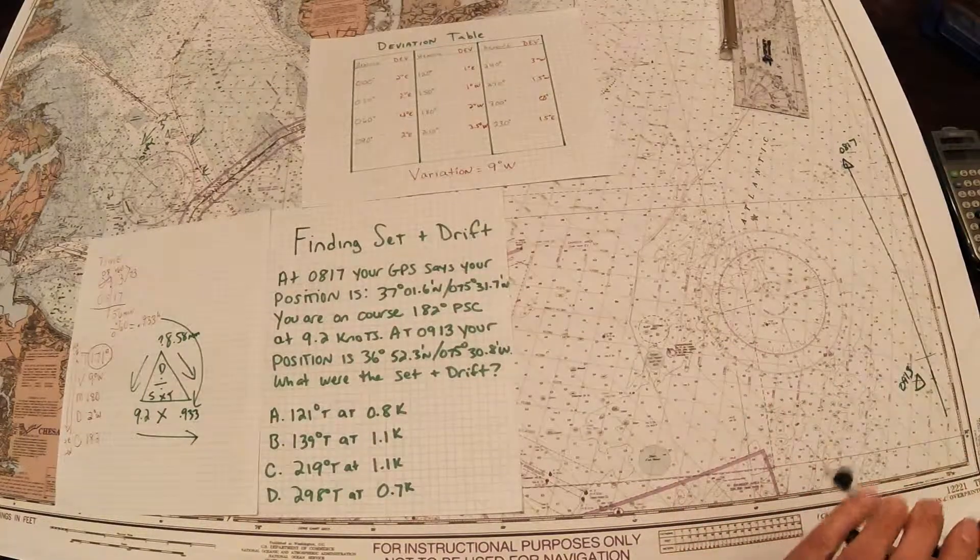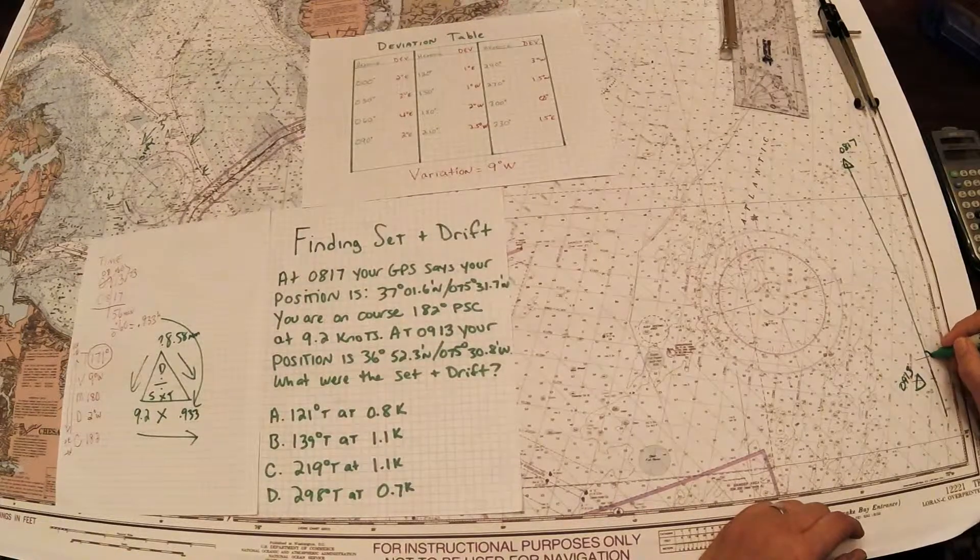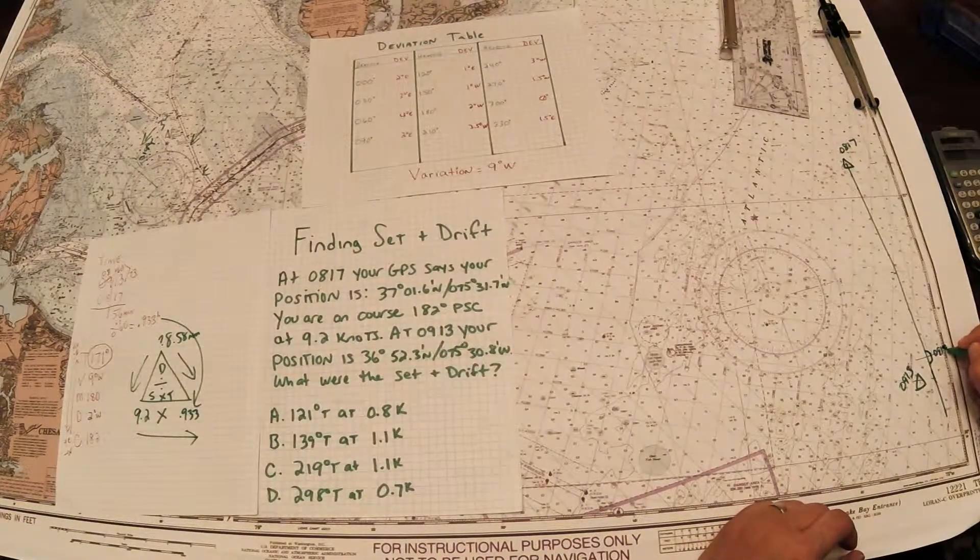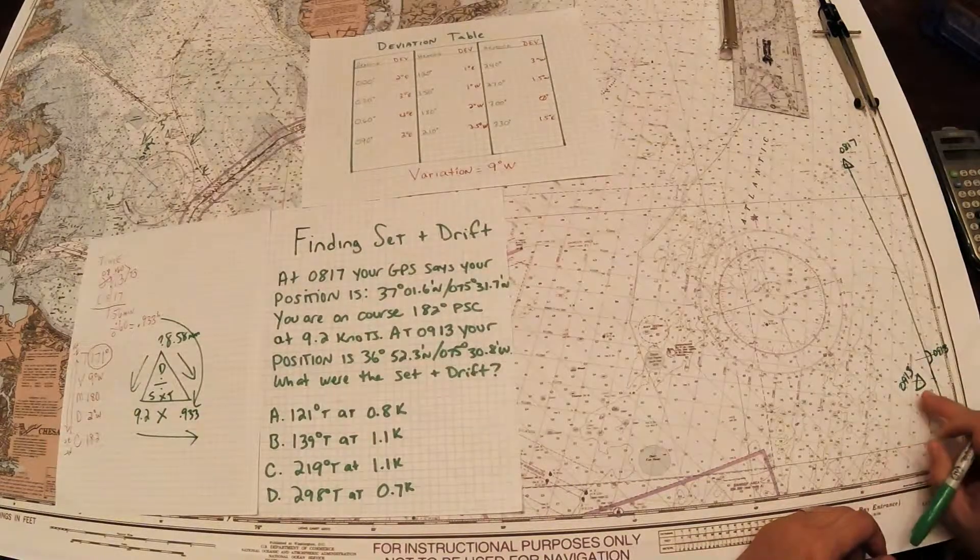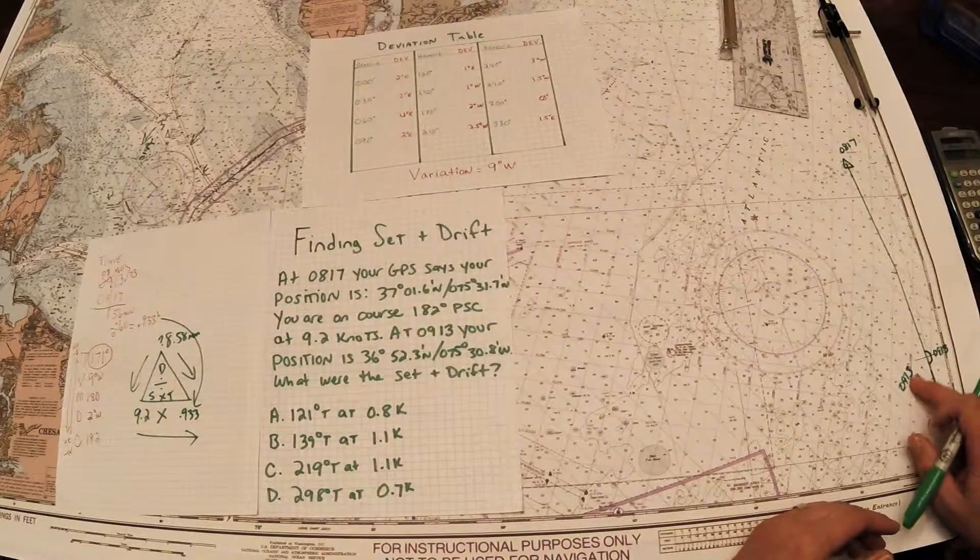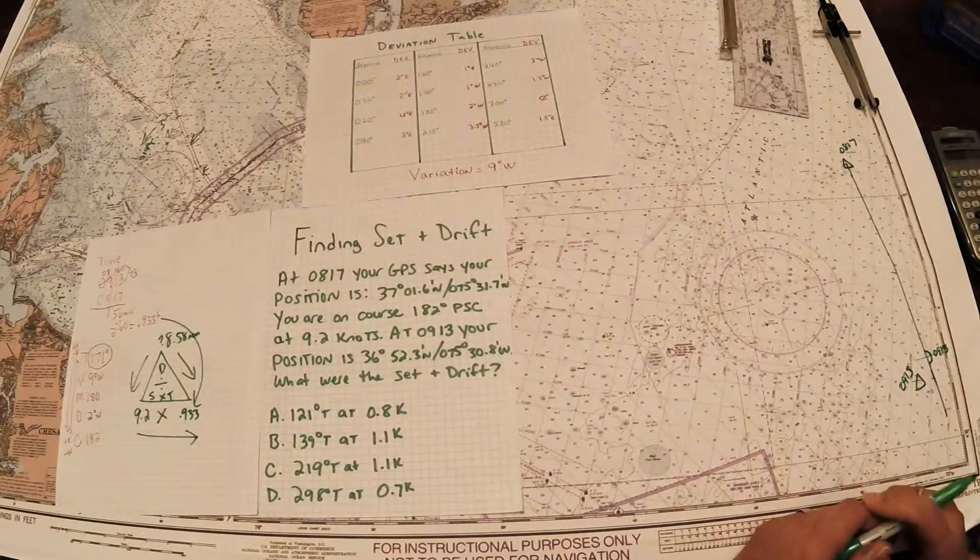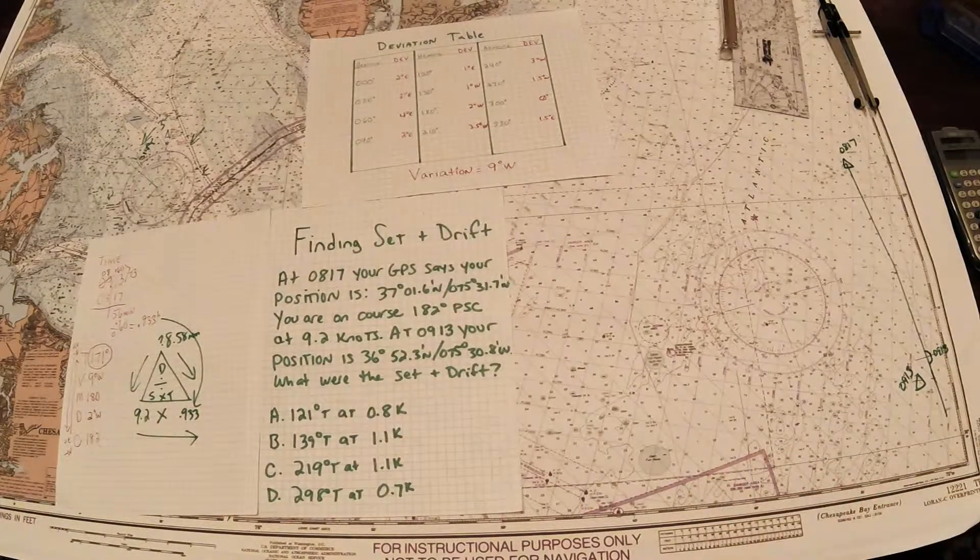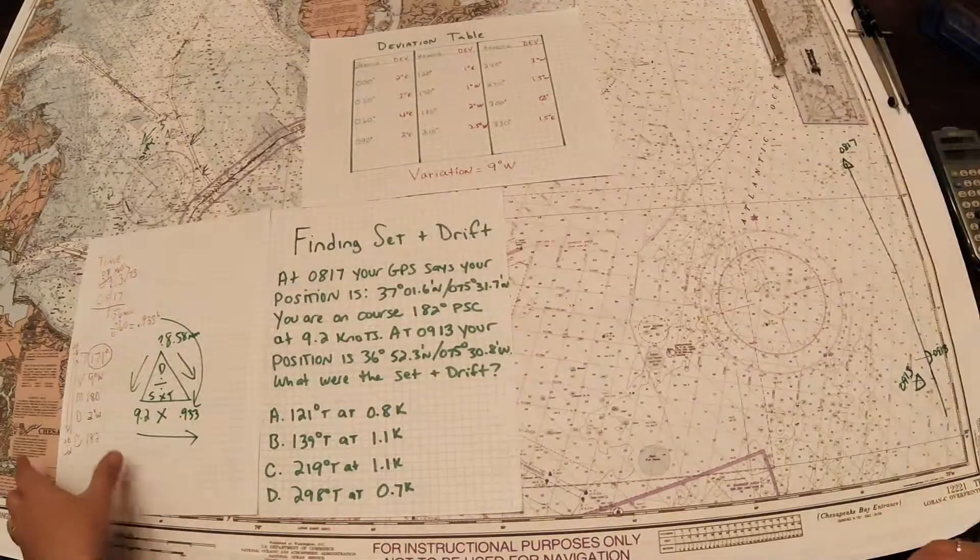That mark right there is called a DR, dead reckoning. That is where I should have been at 0913. DR has a half circle. Fix electronic fix has a triangle, visual fix would have a circle or celestial. We're just using the symbols, those are not that big of a deal but just a good habit to get into. Now what we're trying to solve in this question is direction and speed, so we are looking for the set and the drift.